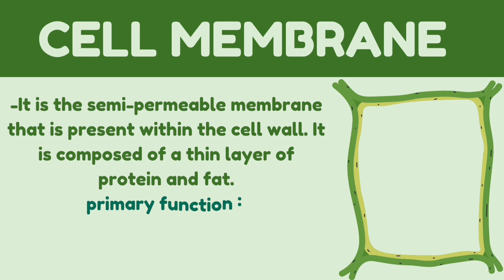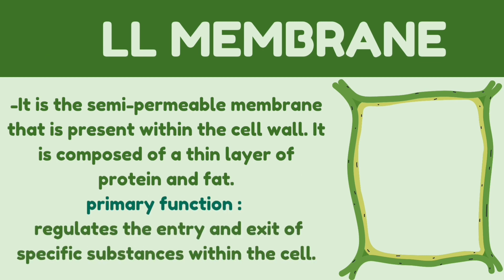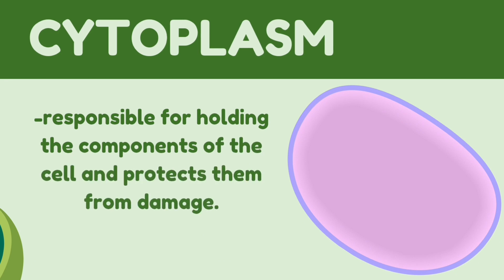Next, we have the cell membrane. The cell membrane is a semi-permeable membrane present within the cell wall. It is composed of a thin layer of protein and fat, and its primary function is to regulate the entry and exit of specific substances within the cell — another layer that protects the organelles inside. Moving on, cytoplasm is responsible for holding the components of the cell and protecting them from damage. The organelles are arranged and held together by this gelatinous liquid made up of water and other molecules.